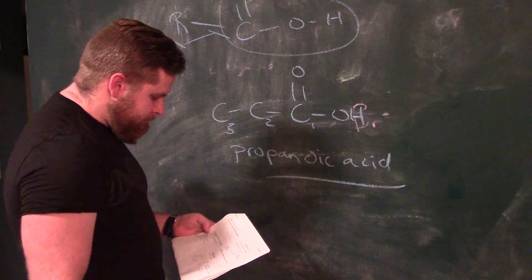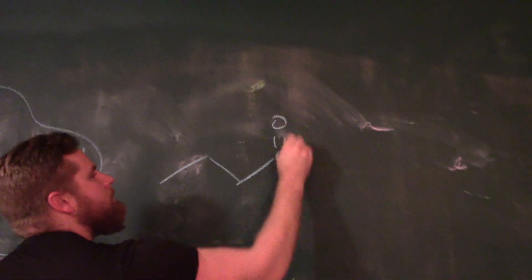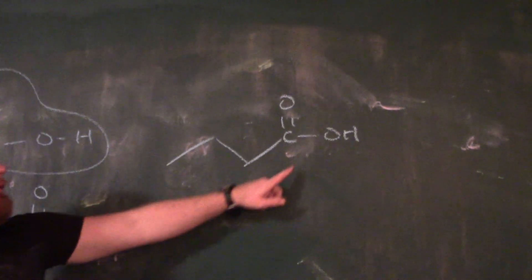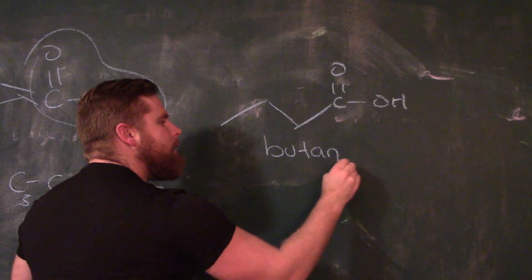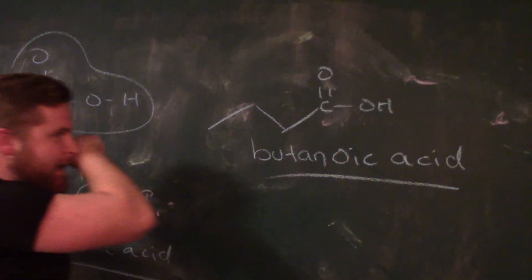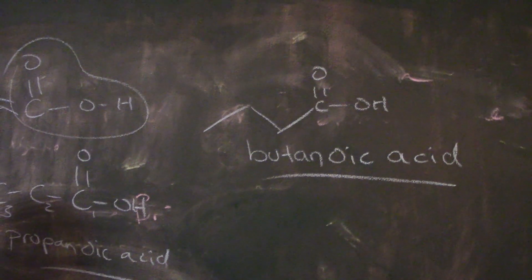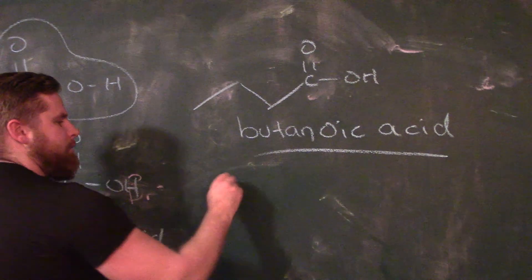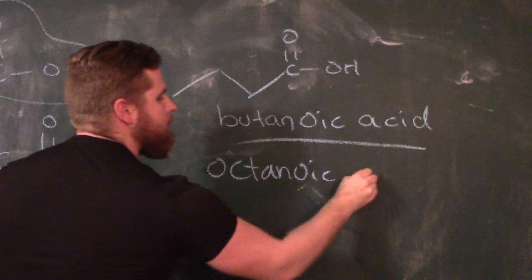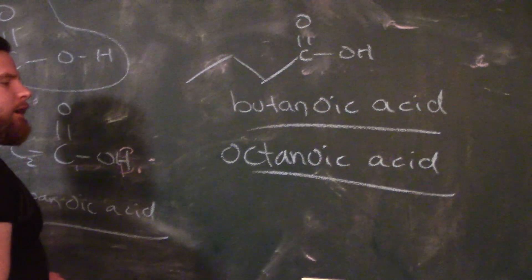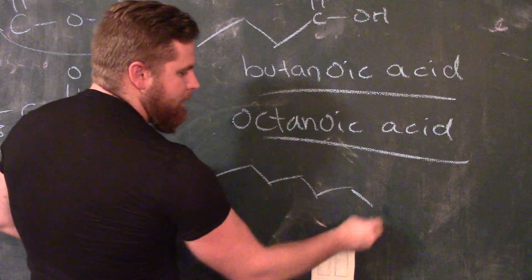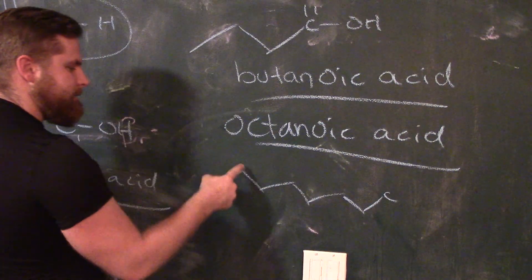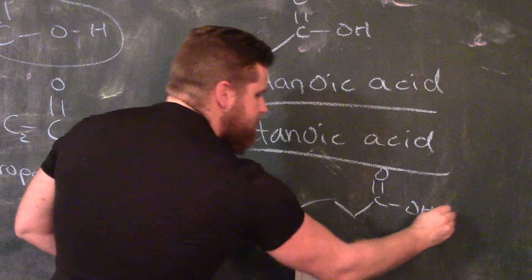Let me name some of these. Let's start simple: the carbons are numbered from the closest functional group, so 1, 2, 3 — that's 3 carbons, so 'prop' — this would be propanoic acid. The '-oic acid' suffix represents carboxylic acids. Here's a line structural diagram: carbon 1, 2, 3, 4 — that's 4 carbons, so butanoic acid. For a word problem: octanoic acid would be a line structural diagram with 1, 2, 3, 4, 5, 6, 7, 8 carbons, with a C=O and OH at carbon 1 — that's octanoic acid.